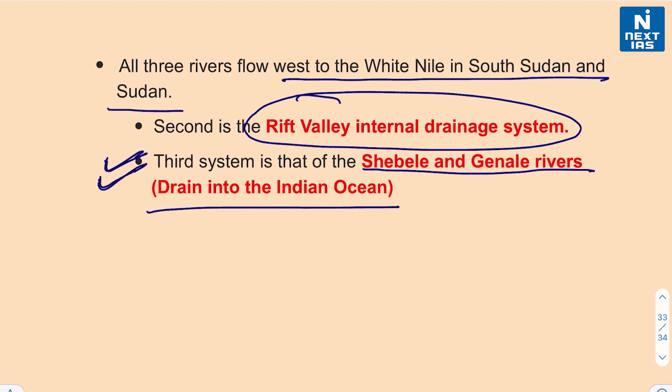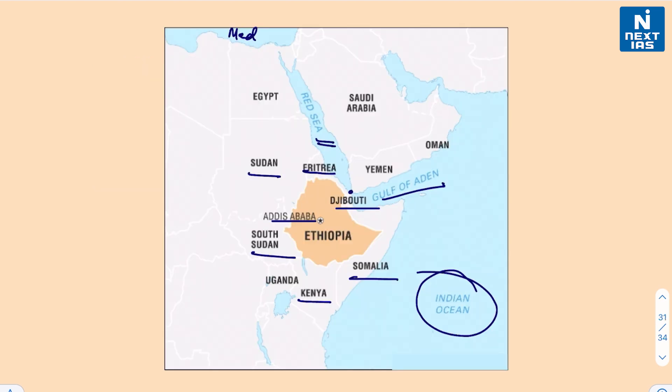That means flowing eastward towards the Indian Ocean. This was a little bit about Ethiopia, and with this we call it a wrap of today's edition of Places in News. I hope you liked the video. I will see you with some other topic tomorrow. Till then, take care and do stay tuned.